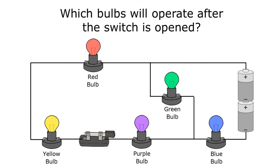This question asks: which bulbs will operate after the switch is opened? If the switch is open, electricity will no longer be able to go through it — it creates a gap in that part of the circuit. Read circuit questions closely to make sure you understand what's being asked. I'm going to trace the paths to see which bulbs will operate once that switch is open.